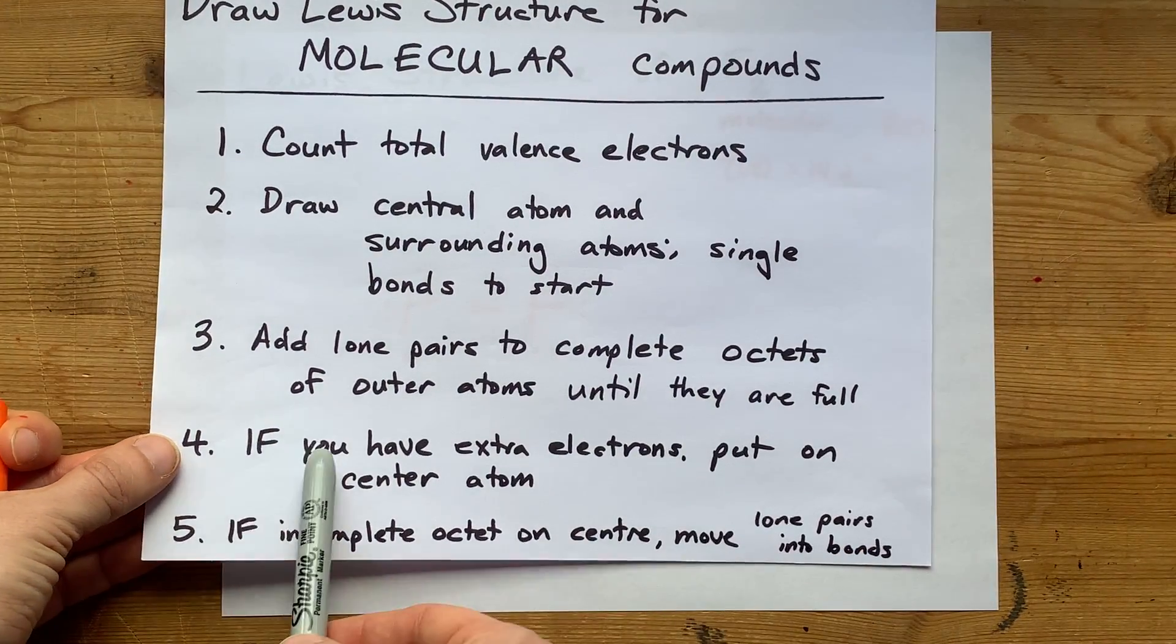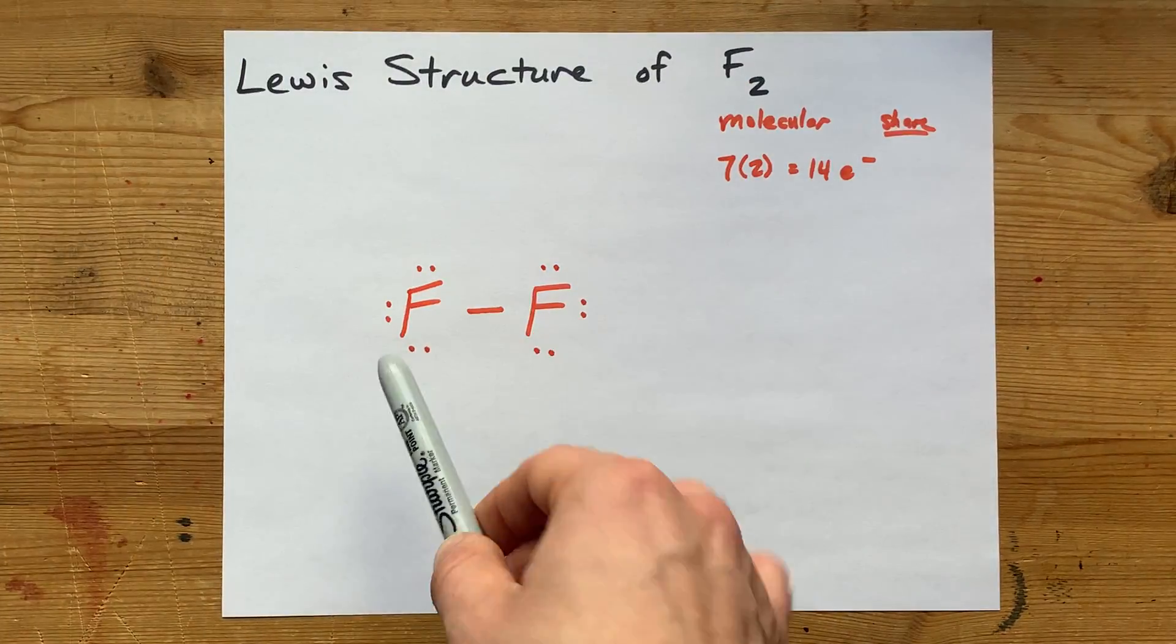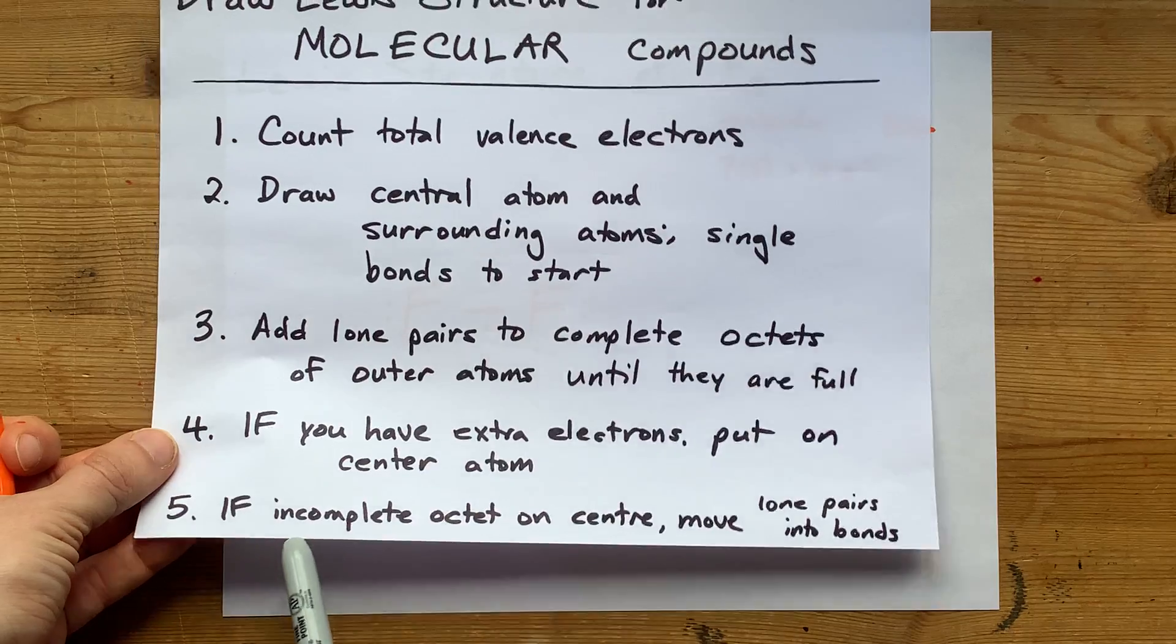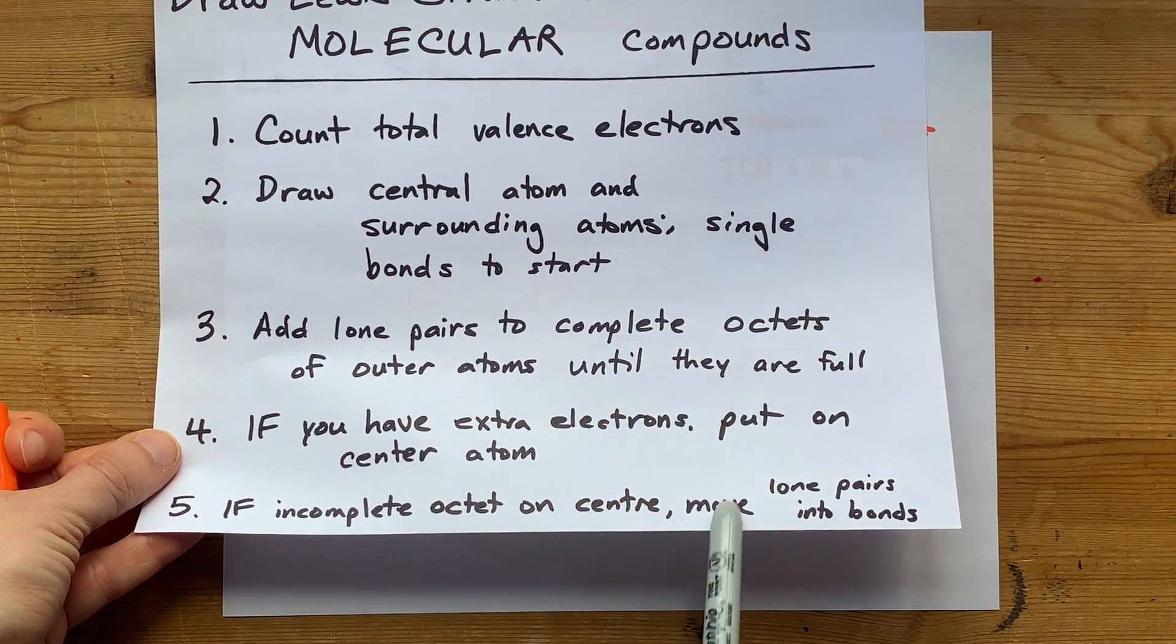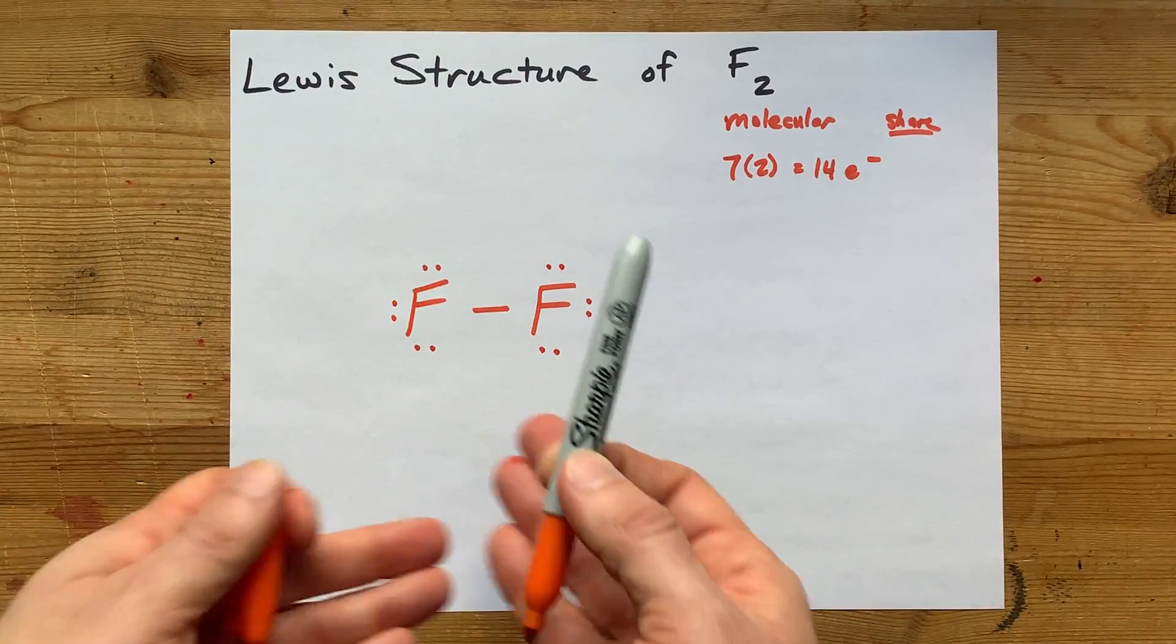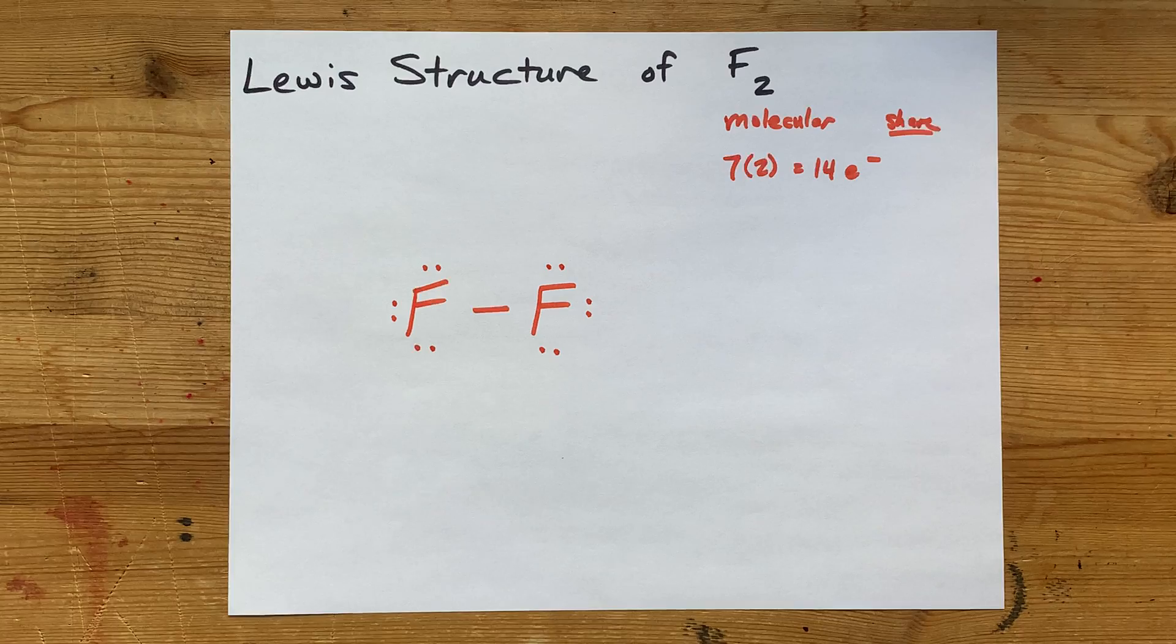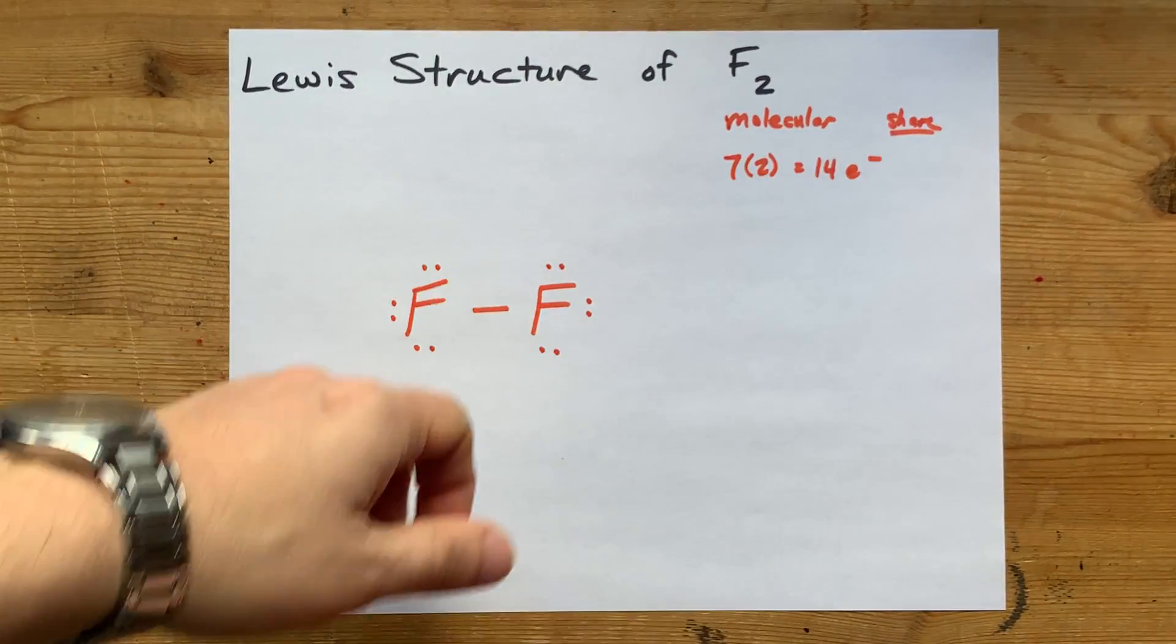I think I'm done, but let me show you that if you have extra electrons, you would put them onto the central atom. We don't have that. And if you had an incomplete octet on the central atom, we would move lone pairs in to make double, triple bonds, etc. But that's also not an issue here, because this fluorine has a complete octet, and that fluorine has a complete octet.